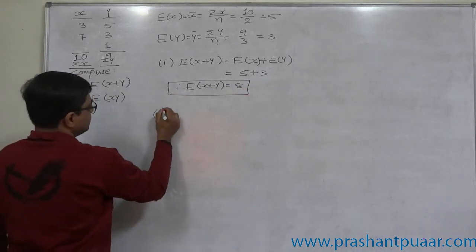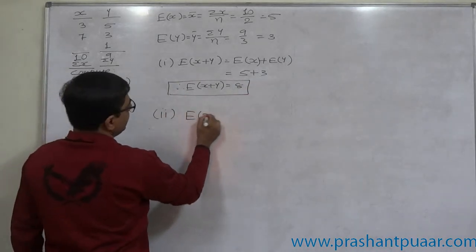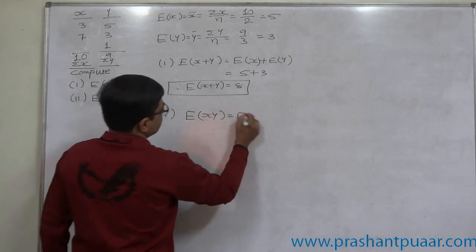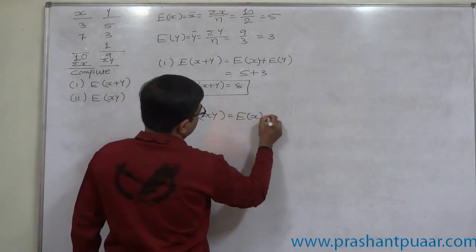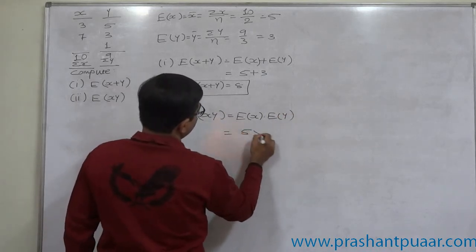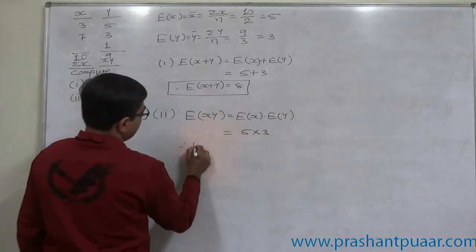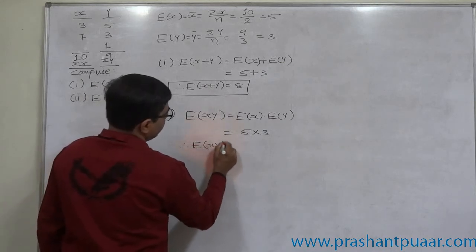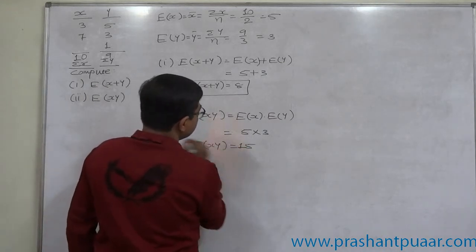And in the second case, we require to calculate E of xy that is E of x into E of y. So it is 5 into 3. Therefore, E of xy comes to 15 in this case.